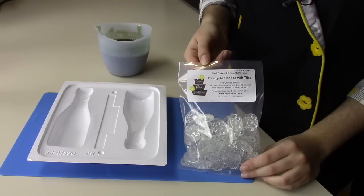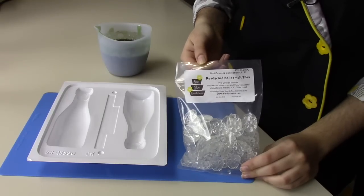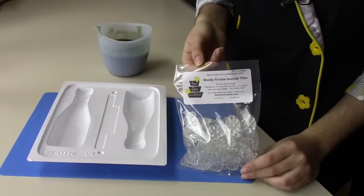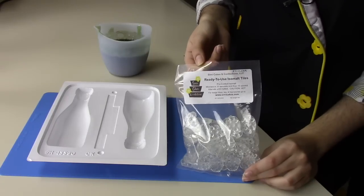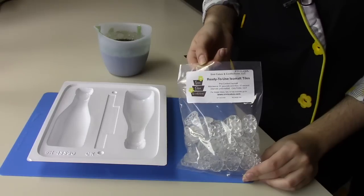For this project, I'm using Simi Brand Isomalt, which is a precooked isomalt tile, which means it's already been tempered, so all I have to do is pop it in the microwave for about 30 seconds and then 15 second intervals until it's a liquid.